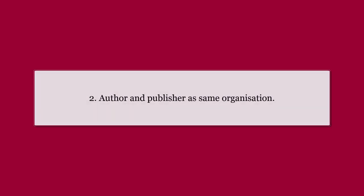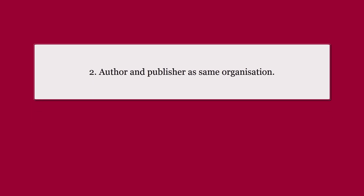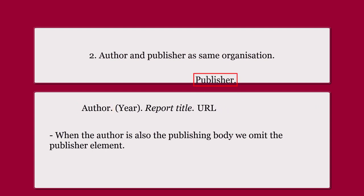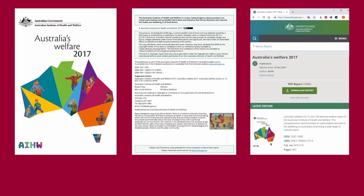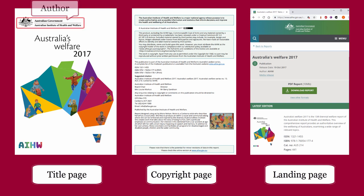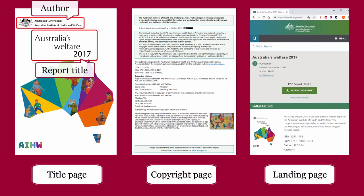Second example: the author and publisher are the same organisation. Because the author is also the publishing body, we omit the publisher element. The details for citing an online report are usually found on the report title page, copyright page, and report landing page. Important details include author, report title, year, and URL.